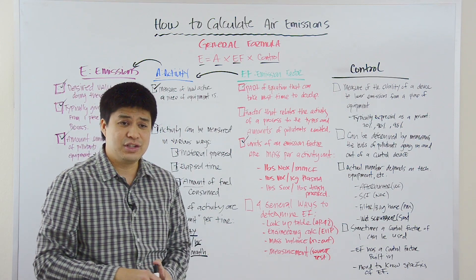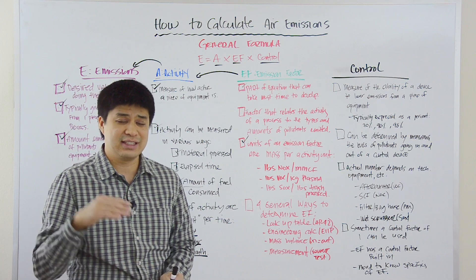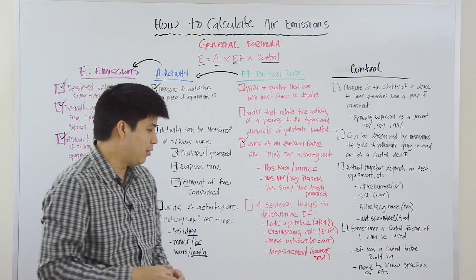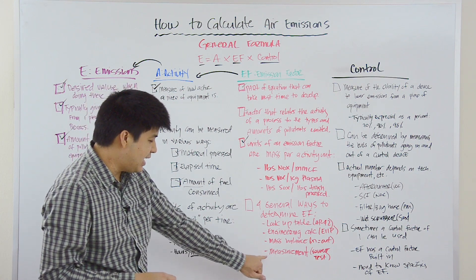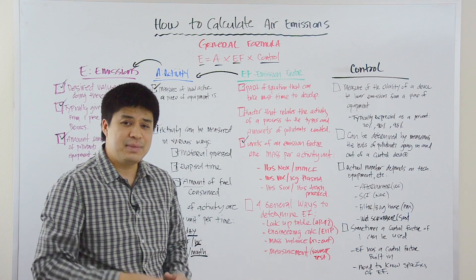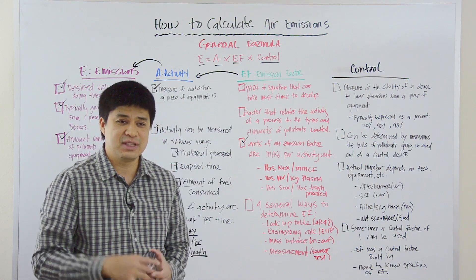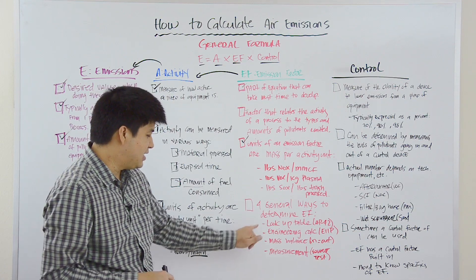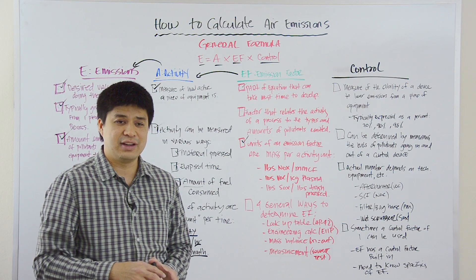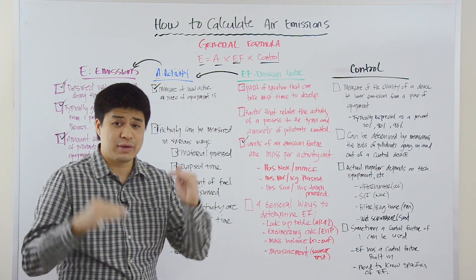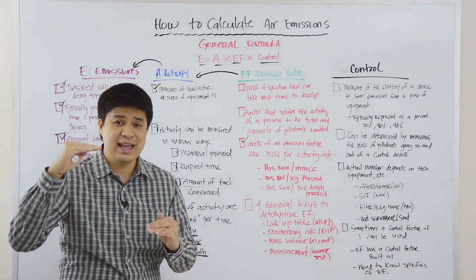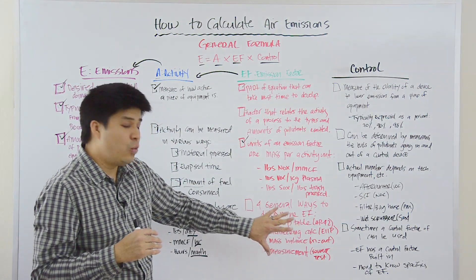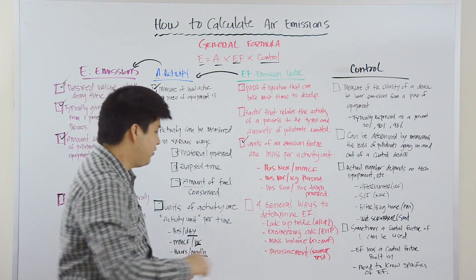And then lastly, you can do a measurement or a source test. And actually, during a source test, you would have a company come out and actually measure the emissions from your piece of equipment when that piece of equipment is in operation. Generally speaking, what we see is that the measurement seems to be the most accurate and the engineering calculation seems to be the least accurate. But also, the measurement seems to be the most expensive and simply looking up the emission factor on a table seems to be the least expensive. And so, there's a trade-off between accuracy and cost that you have to balance when selecting the way that you're going to find or determine your emission factor.